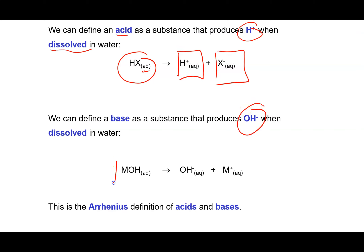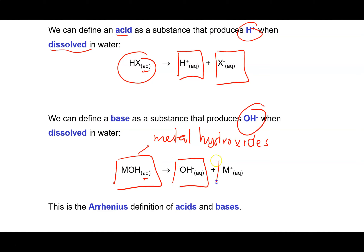A very common class of bases are metal hydroxides. Not many metal hydroxides are particularly soluble, so bases tend to be hydroxides of the group 1A metals. These are ionic compounds, so when a metal hydroxide is dissolved in water, it will form the hydroxide anion and some kind of cation. This definition — based on the potential of compounds to produce either hydroxide ion or hydrogen ions when dissolved in water — is called the Arrhenius definition of acids and bases.